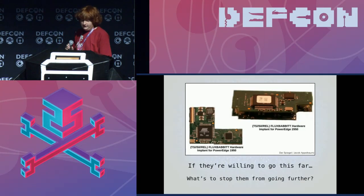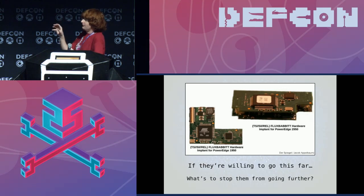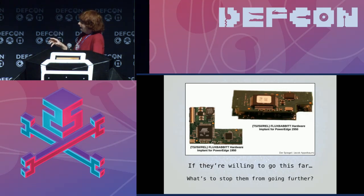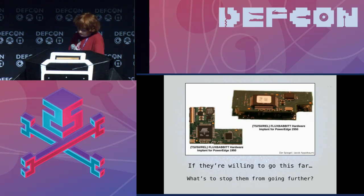What highlights this best is a piece of hardware that the NSA has created called FluxBabbit, which is built for one specific server and is implanted in shipment. If the NSA is willing to make a custom chip to attack hardware, why aren't they attacking the fabrication center? You may think, oh, it's too hard — well, it's not.